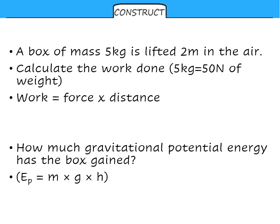Comparing work done to gravitational potential energy, we can see that work is force times distance. In potential energy, mass times gravity — if you recall from Year 9 — is equal to weight, so the weight is the force. And the distance is equivalent to the height. So the two equations are actually comparable.